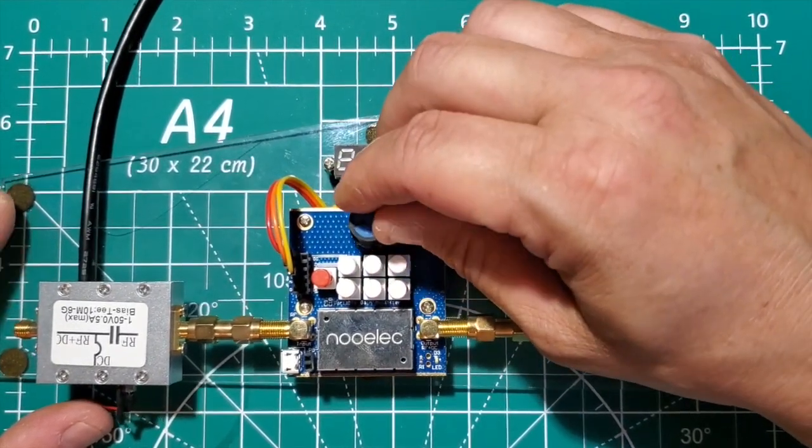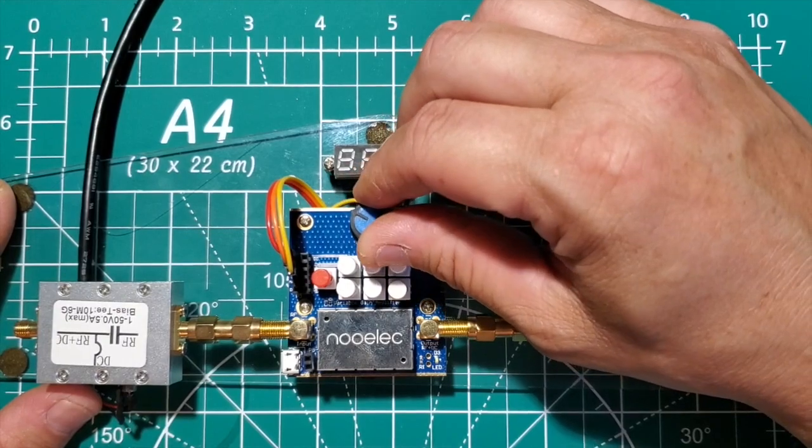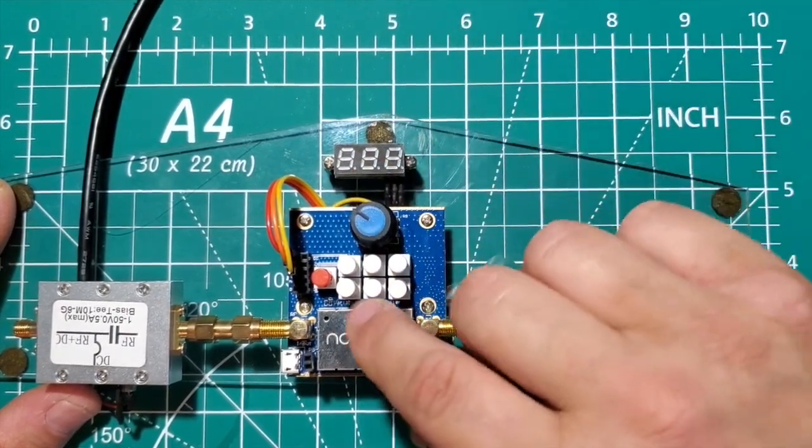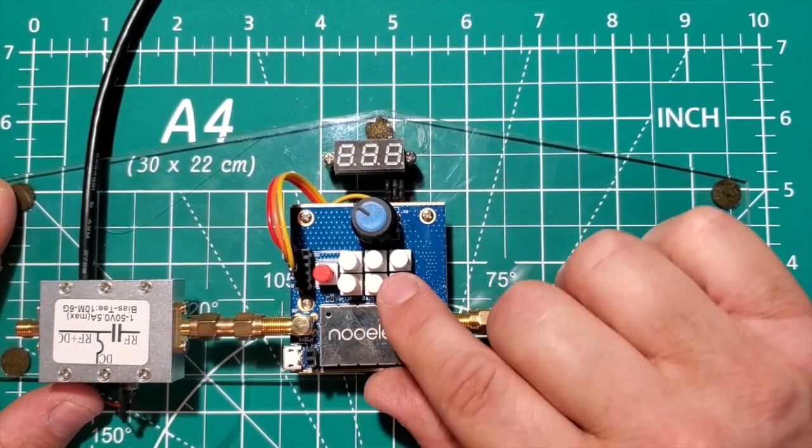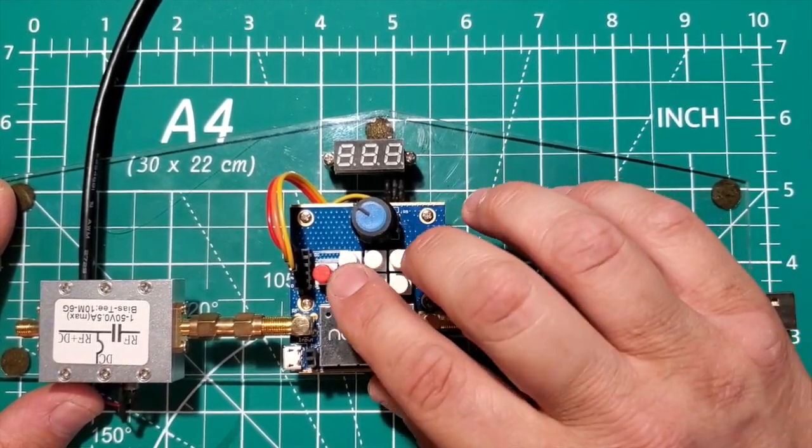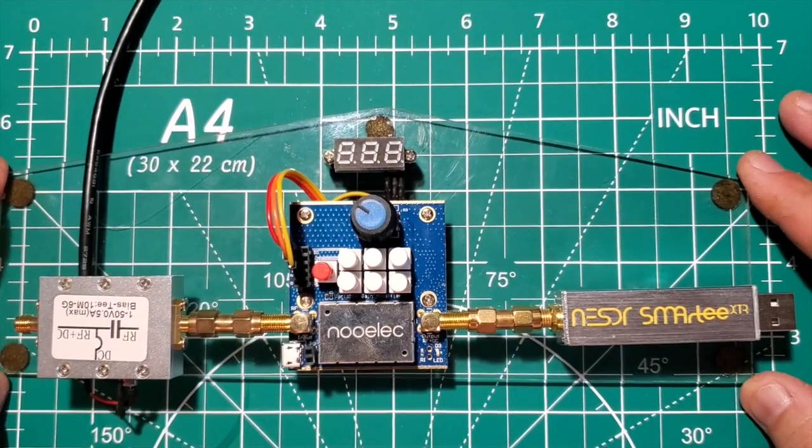You can use this knob here to turn the gain up and down, or you can push in each one of these buttons for a certain amount of gain.